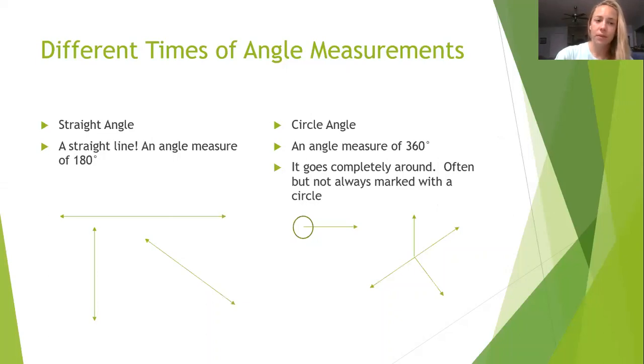A straight angle is, just as it sounds, it is a straight line. You can't really see where the vertex is unless you draw a dot for where the two lines meet, because this is a straight line. It's a measurement of 180 degrees.